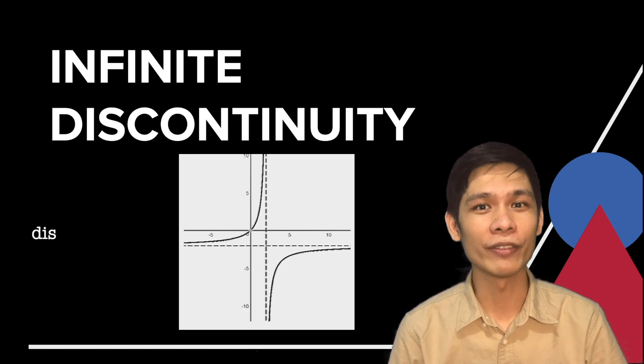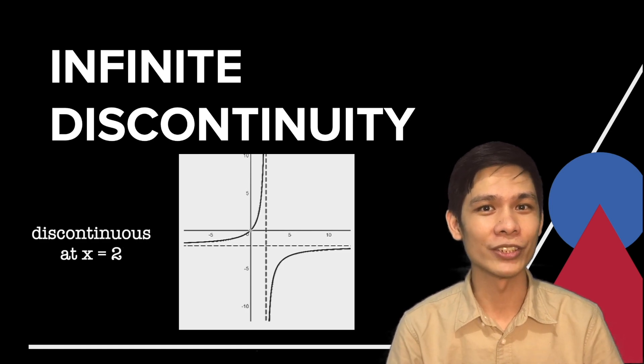And lastly, we have infinite discontinuity, which happens when at least one of the two limits, the left-hand or the right-hand, is infinite.